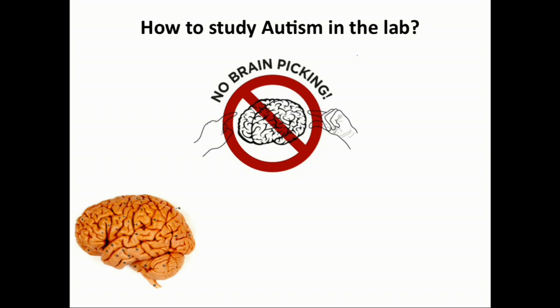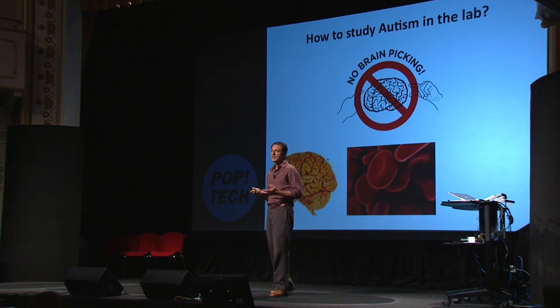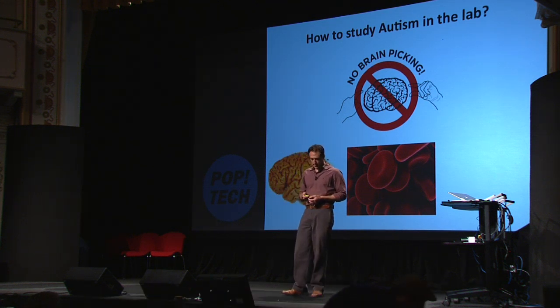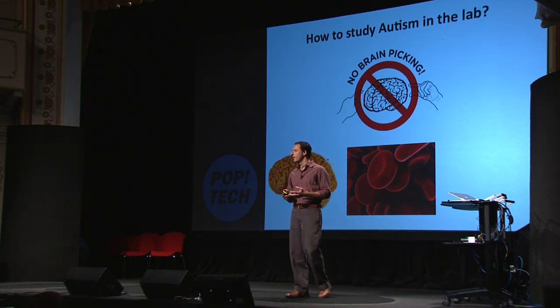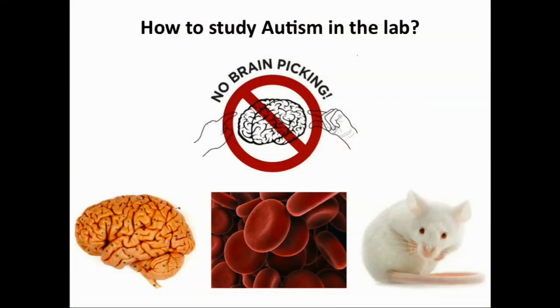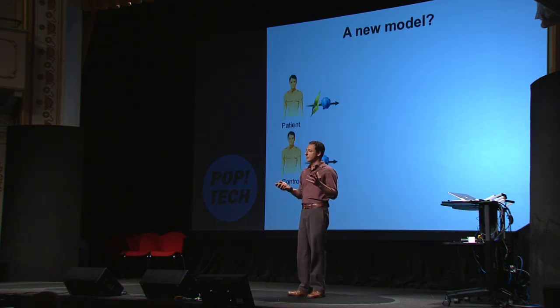We want to know what happens before disease onset. We can also use peripheral cell types — these are easy to get, like skin cells and blood cells — but these are hard to follow up with biological experiments because they are not the relevant cell types. We also have animal models, but autism is really a human condition. We are talking about the way we talk to each other, the way we interact, so it's really hard to make interpretations from animal models.